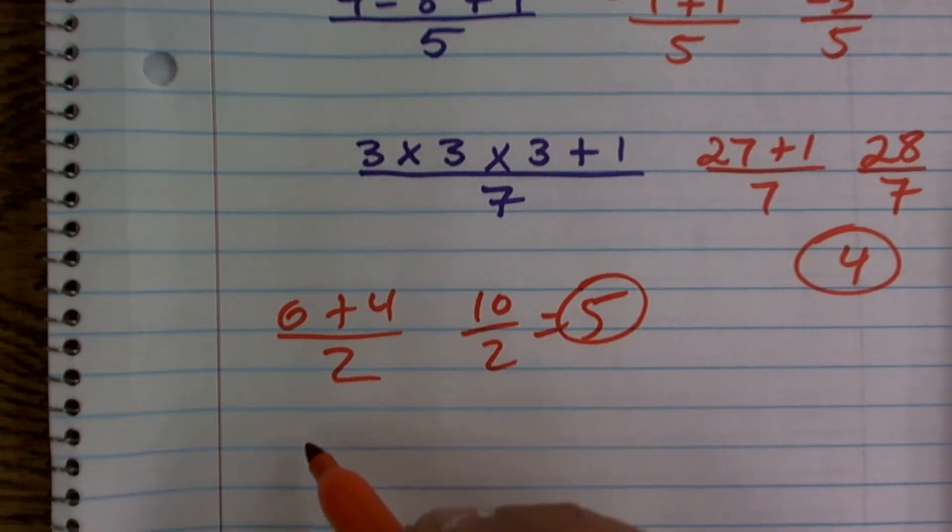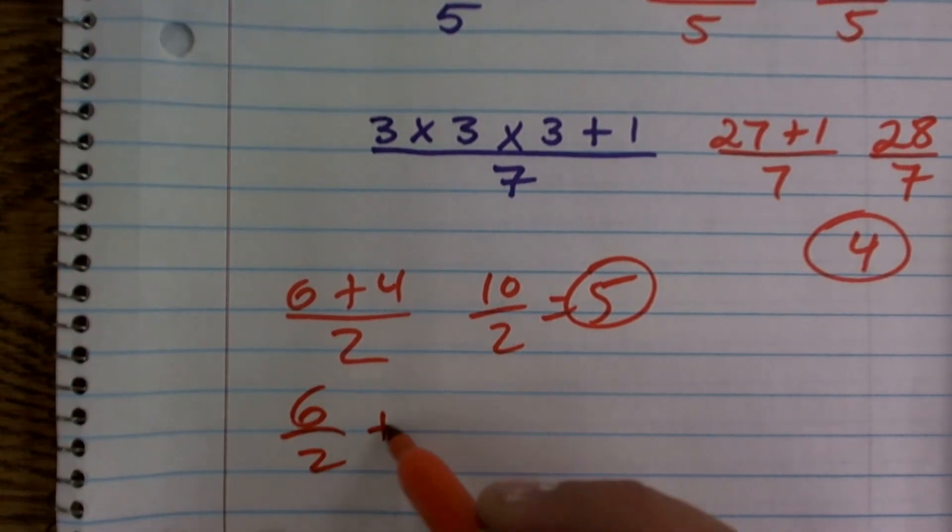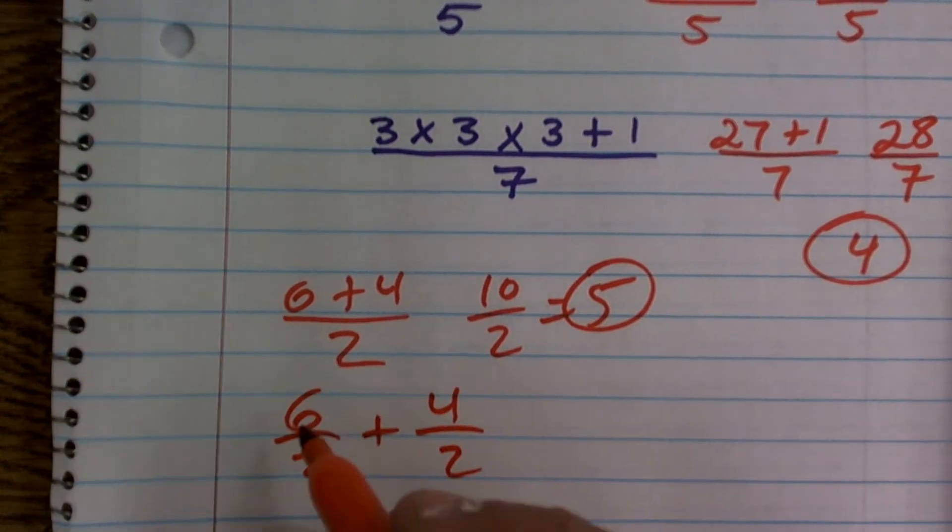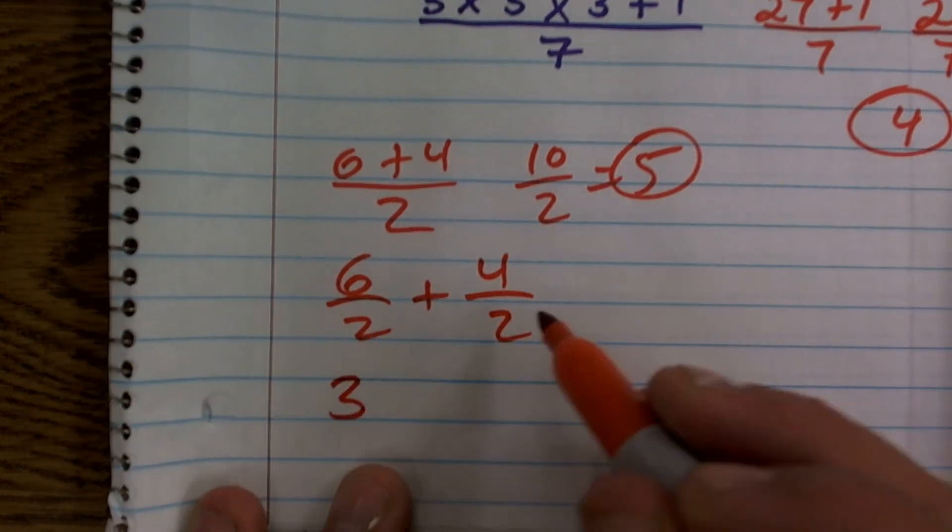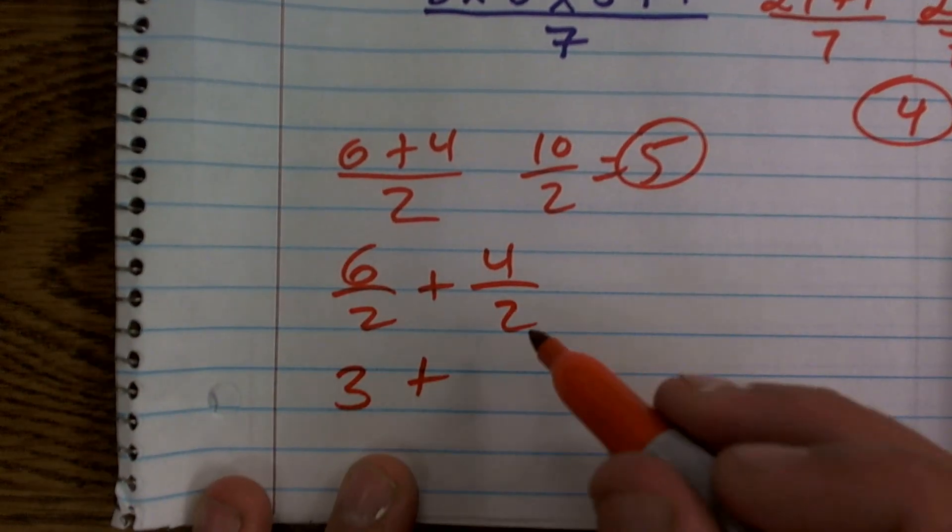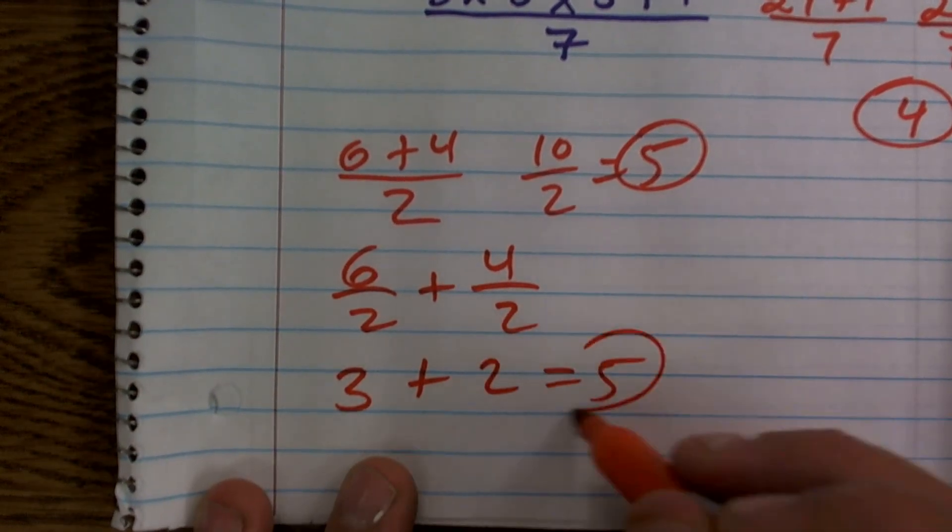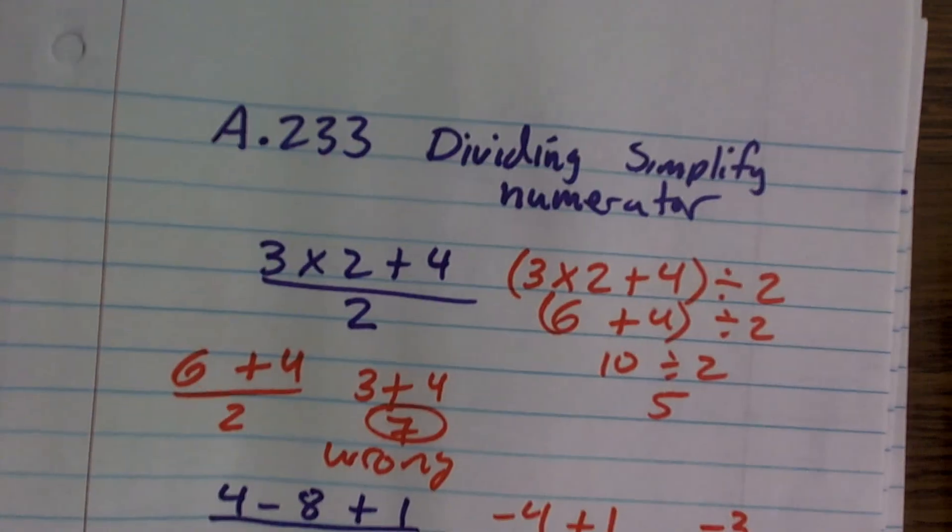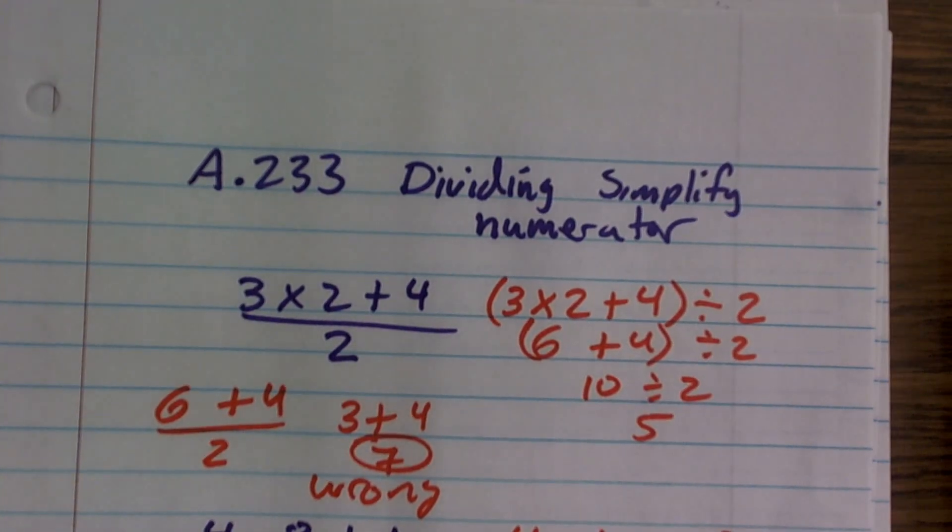Or you could also do 6 divided by 2 plus 4 divided by 2. 6 divided by 2 is 3 plus 4 divided by 2, which is 2, which equals 5. So I just want to kind of go through that. That's a little extra, a little freebie for you.